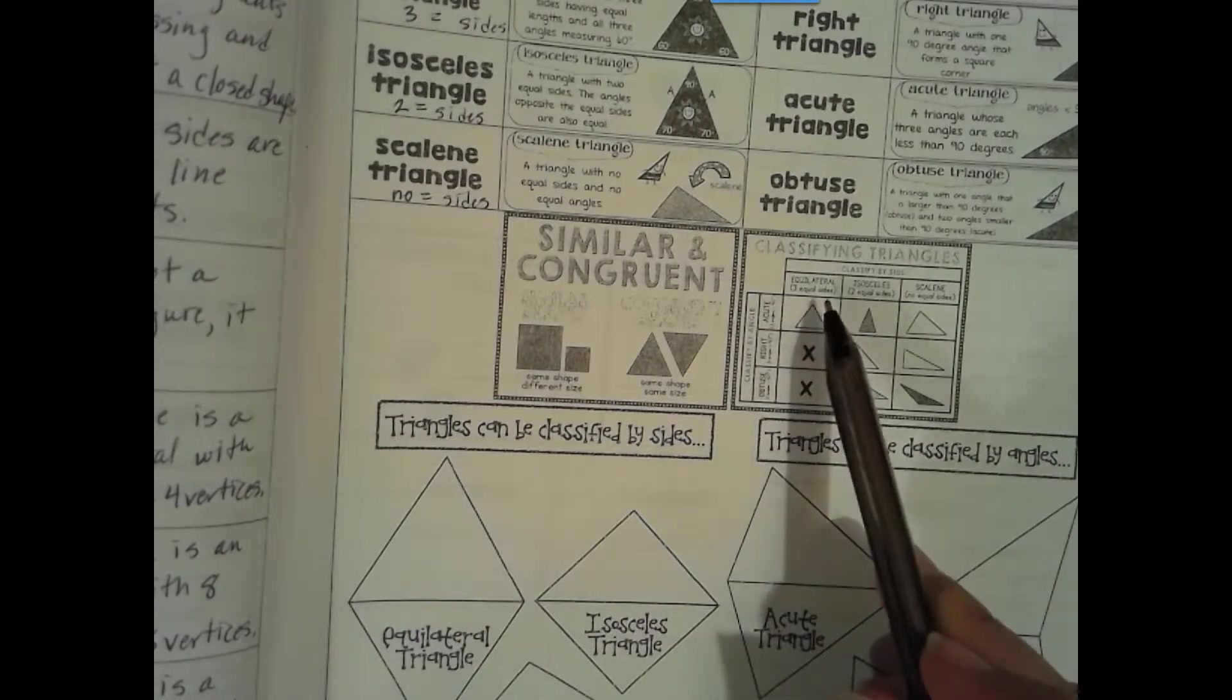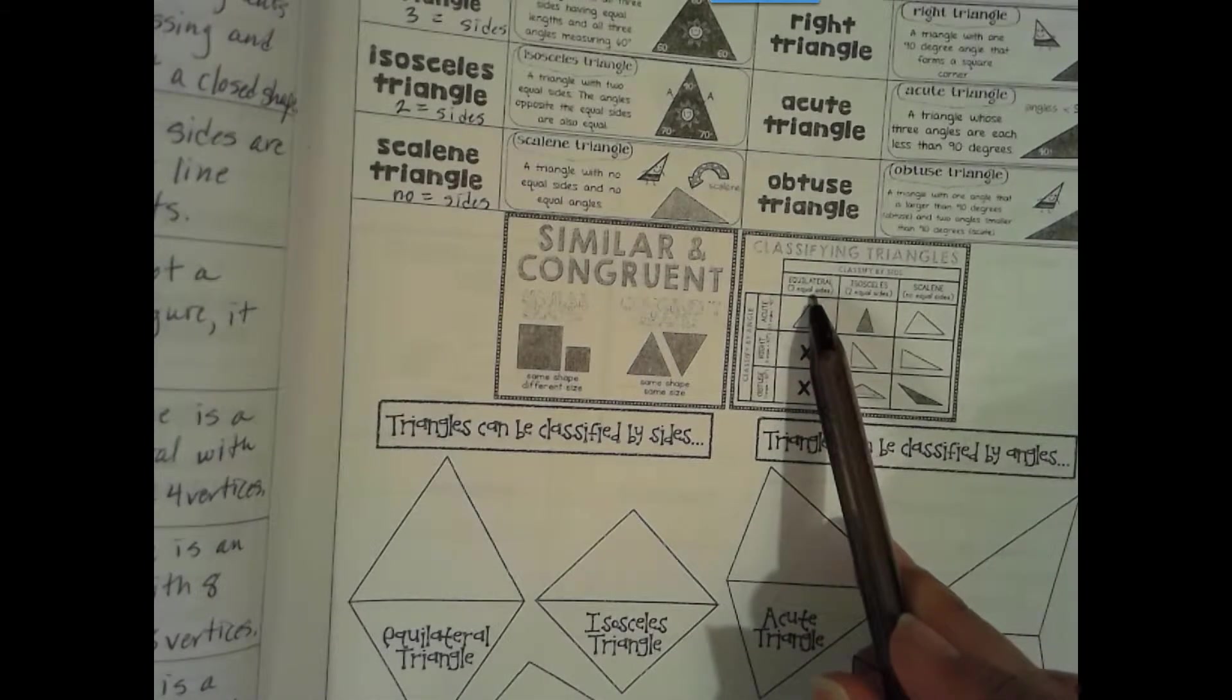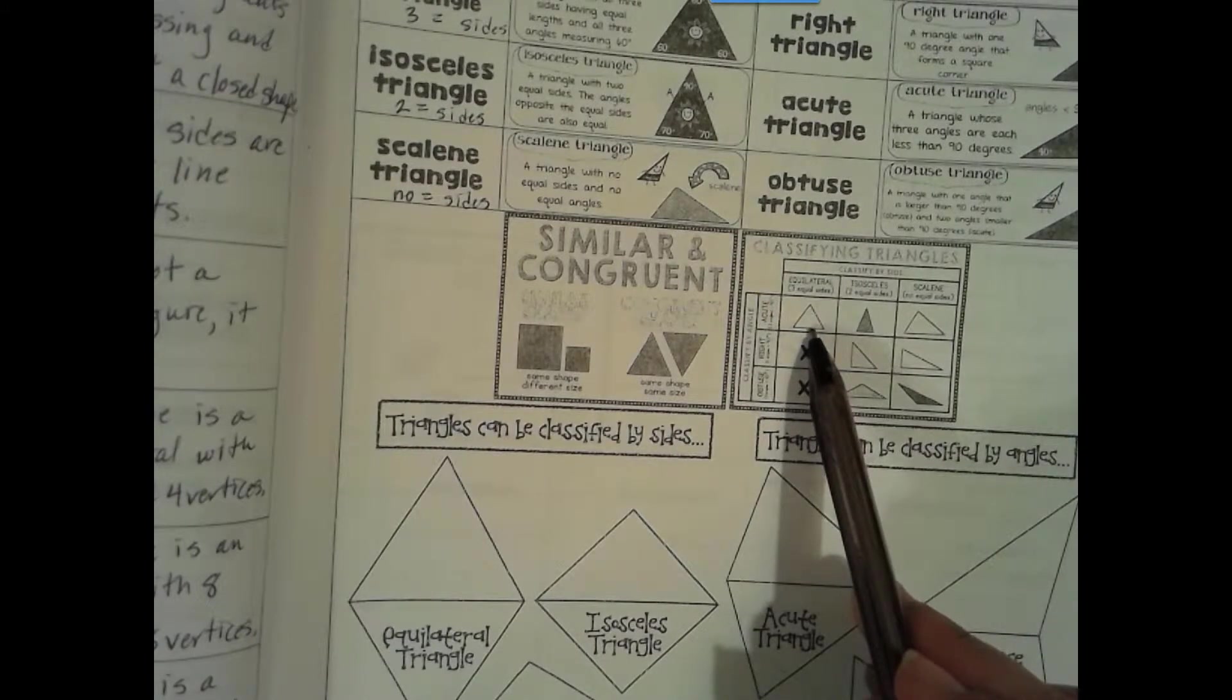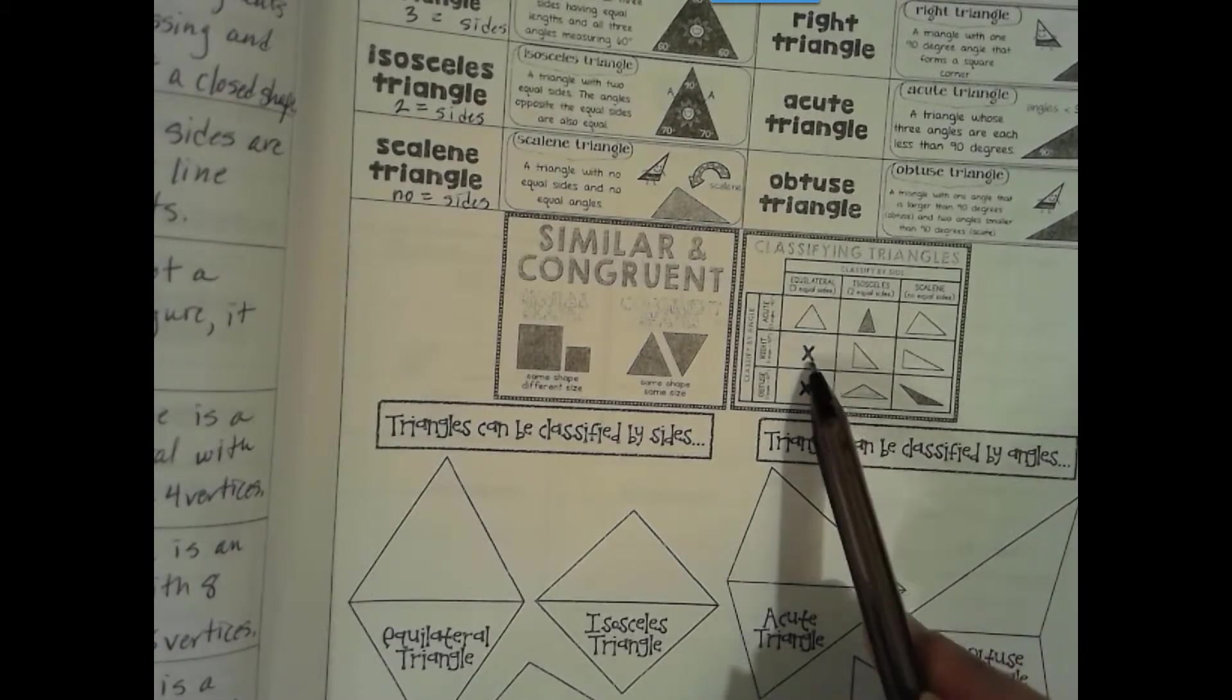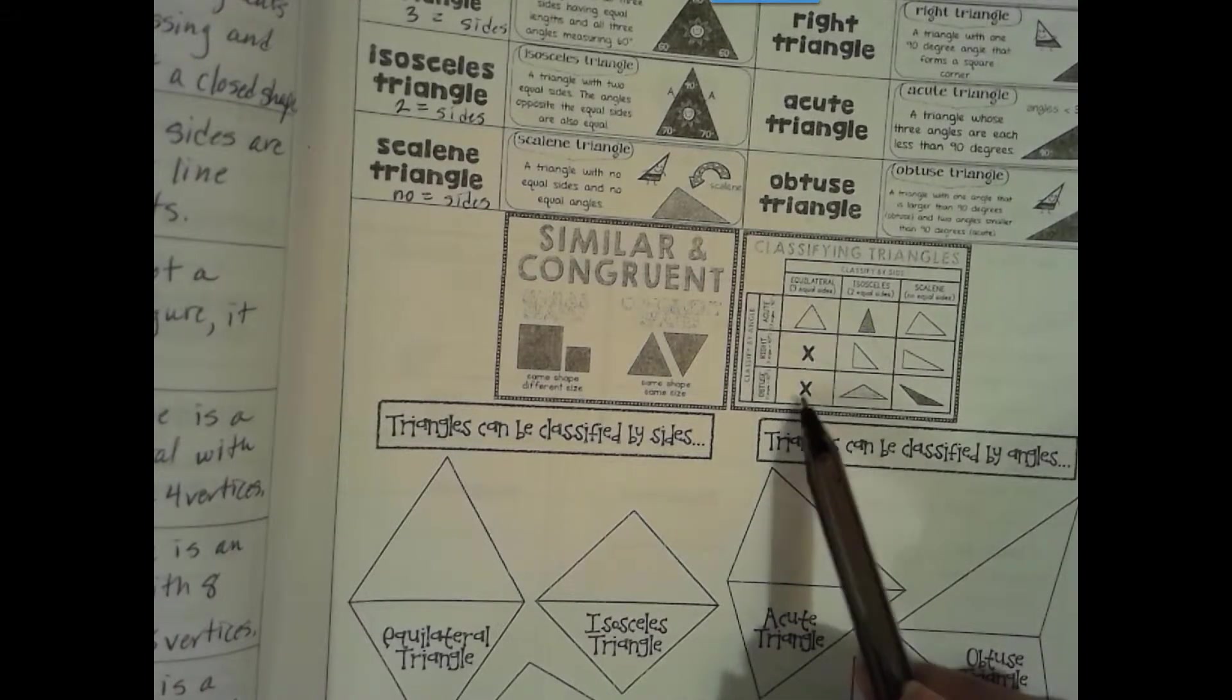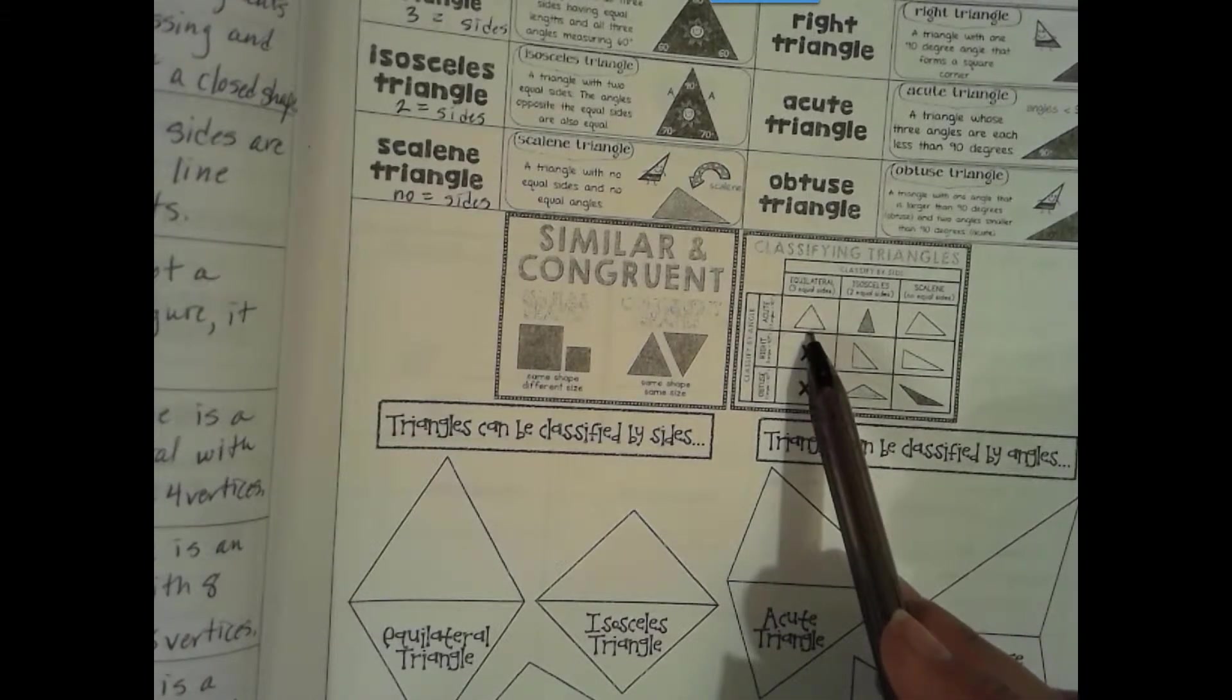Classifying triangles. So if we look at, if it's an equilateral, then it also can be acute. It's always acute. It's never going to be right or obtuse. It's always going to be acute.